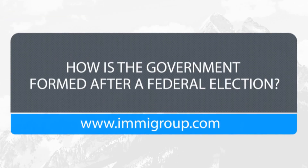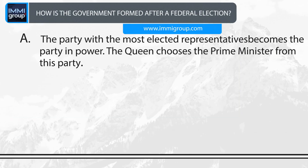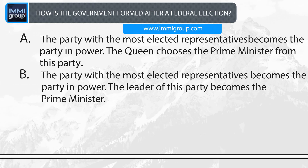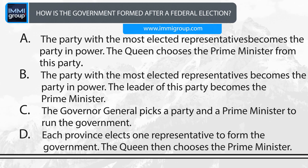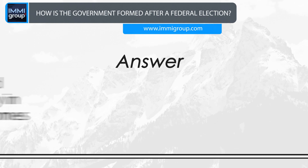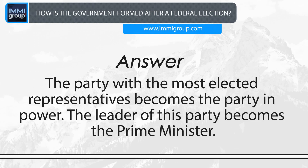How is the government formed after a federal election? A. The party with the most elected representatives becomes the party in power; the Queen chooses the Prime Minister from this party. B. The party with the most elected representatives becomes the party in power; the leader of this party becomes the Prime Minister. C. The Governor General picks a party and a Prime Minister to run the government. D. Each province elects one representative to form the government; the Queen then chooses the Prime Minister. Answer: The party with the most elected representatives becomes the party in power; the leader of this party becomes the Prime Minister.